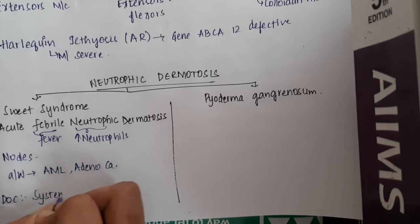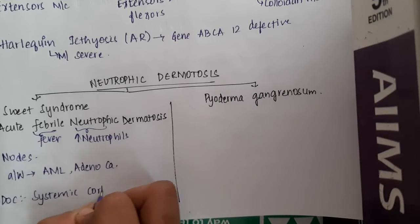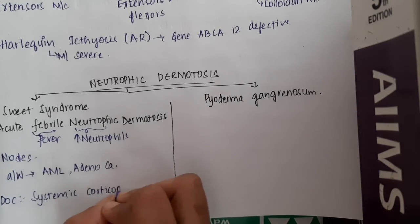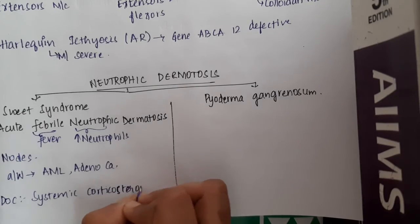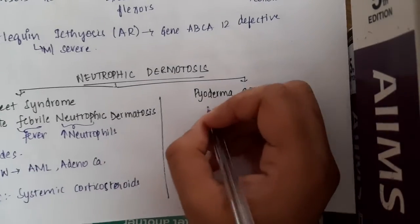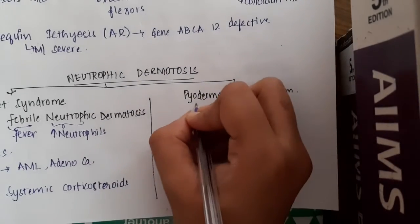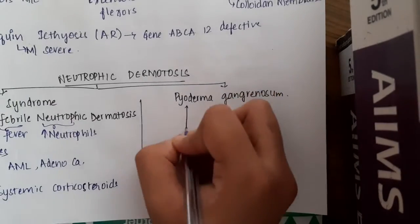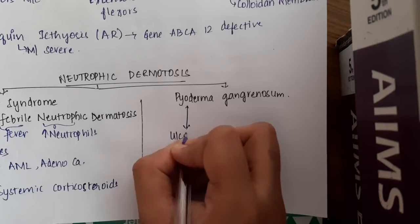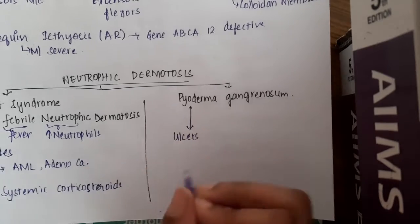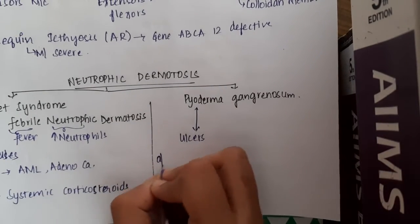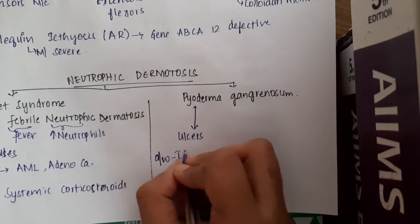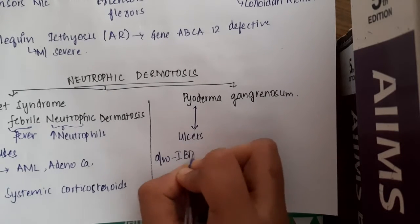The drug of choice for Sweet syndrome is systemic corticosteroids. Then we have pyoderma gangrenosum, where you see ulcers with undermined edges, as opposed to the nodules seen in Sweet syndrome.